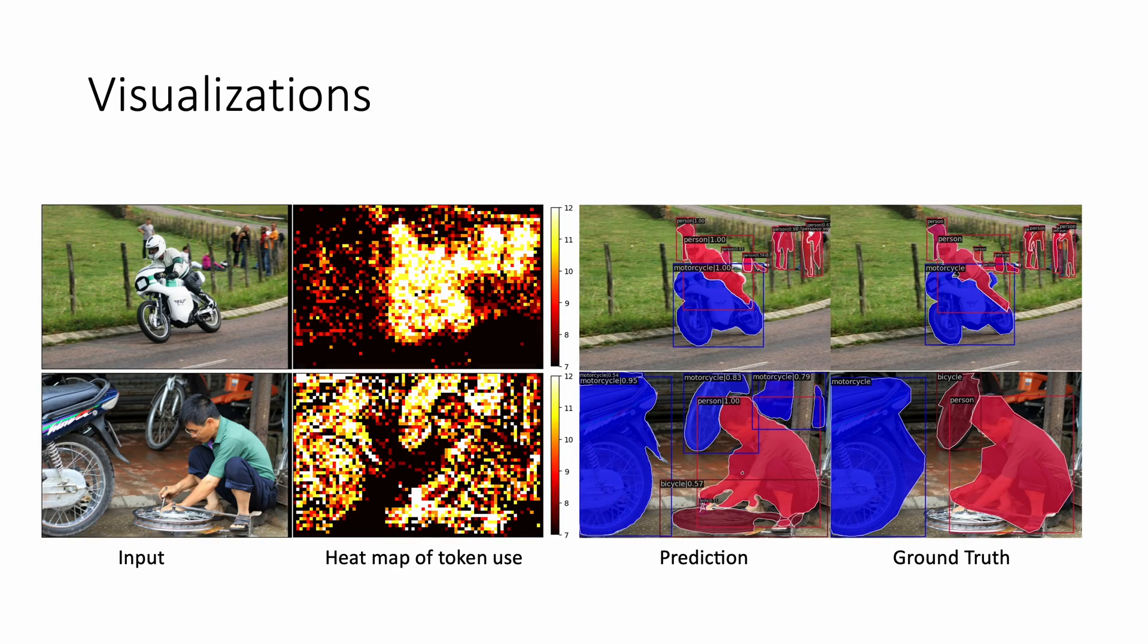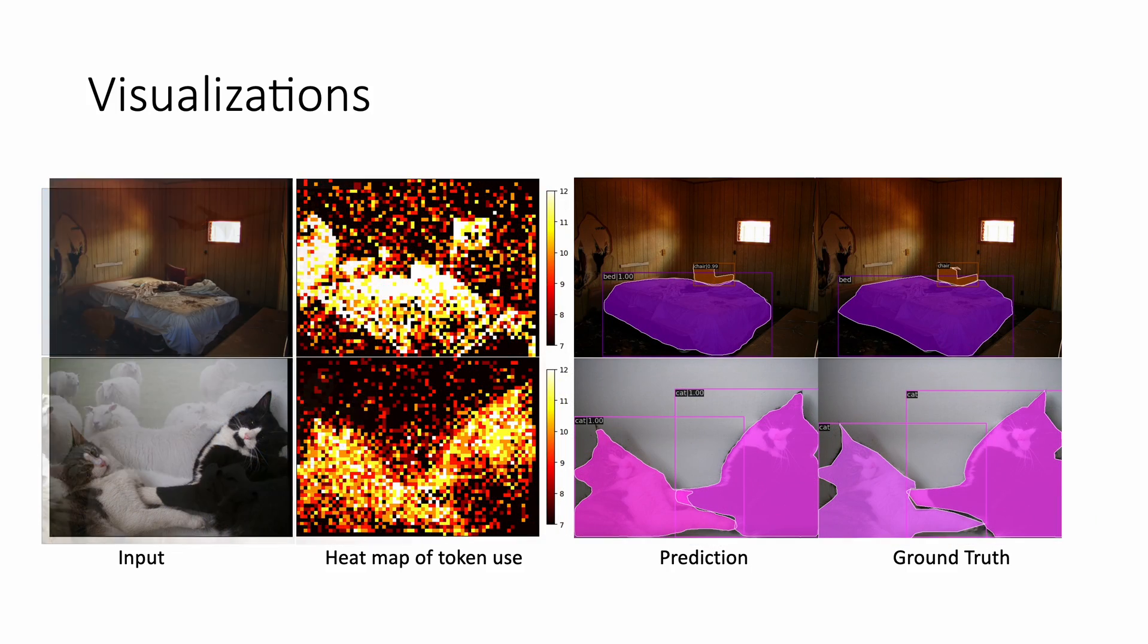Moreover, our approach also shows that the heat maps of token usage highly align with image semantics.